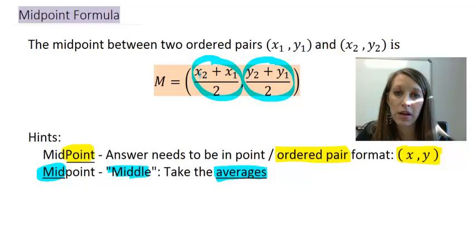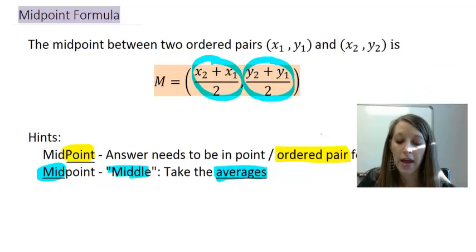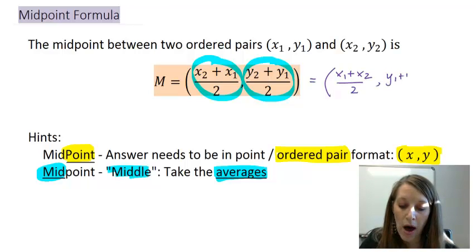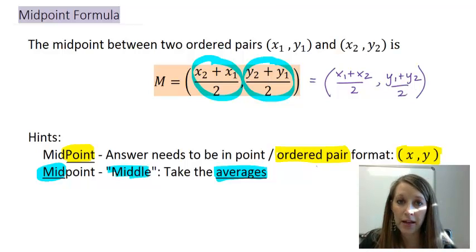Now, notice I have this written in the form of x2 plus x1 and y2 plus y1, but addition is commutative, meaning I can rearrange it in any sort of way. So if I would have written this as x1 plus x2 over two, and same thing with the y, it would give me the exact same calculations.